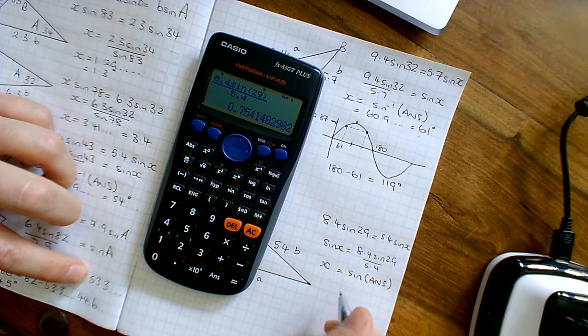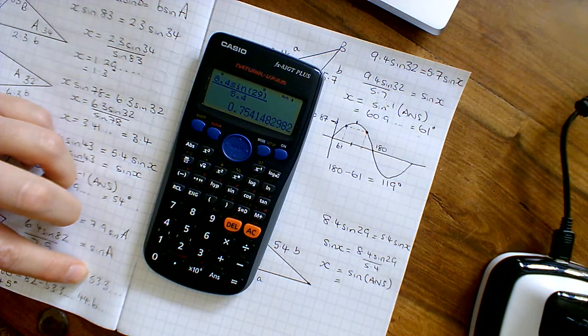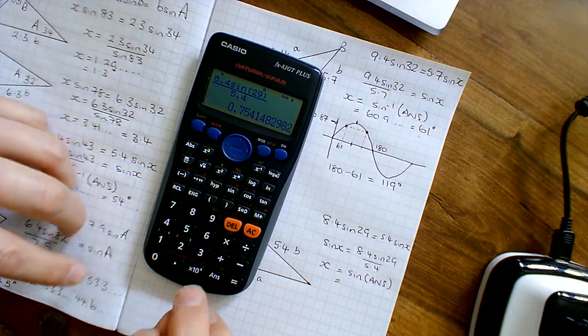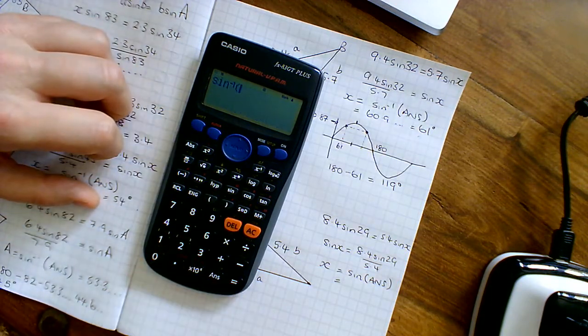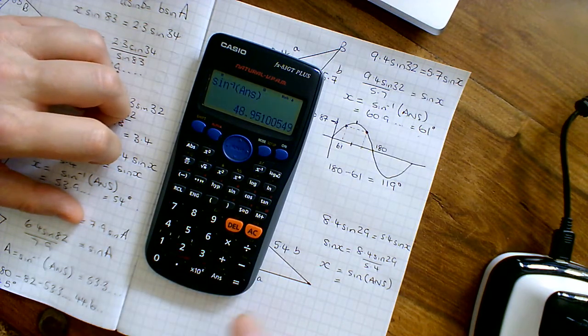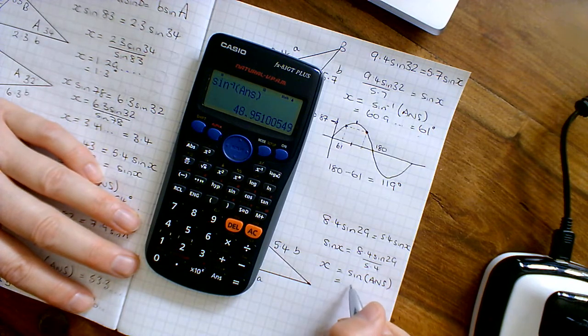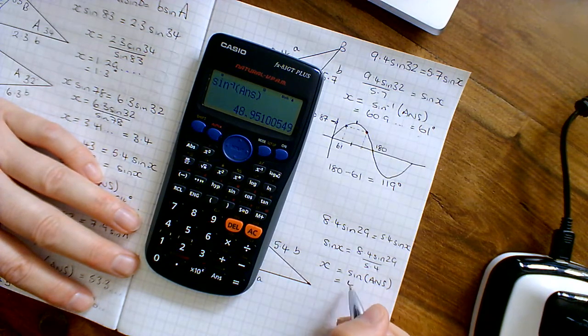So X is equal to sine of that answer, that 0.75 thing. Just check I'm going to the nearest degree, yep nearest degree. So shift sine minus 1 of the answer that I've just had, close my bracket and press equals, and I've got 48.9 so 49 degrees. So that's going to be X equal to 49 degrees.